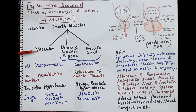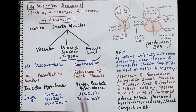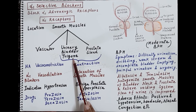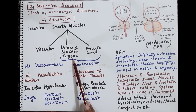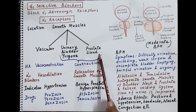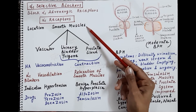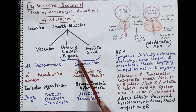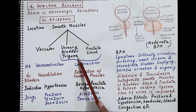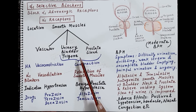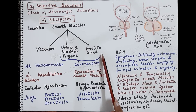Apart from the vascular smooth muscles, smooth muscles are also present in the trigon of the urinary bladder — a smooth triangular region in the urinary bladder. Alpha-1 receptors are located in these smooth muscles of the trigon, and also in the smooth muscles of the prostate gland. So alpha-1 receptors are present in the vascular smooth muscles, the smooth muscles of the bladder neck, and the smooth muscles of the prostate gland.